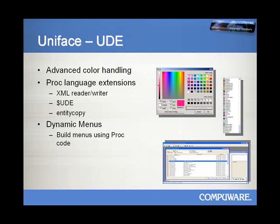The PROC code of Uniface 9 has been extended on many levels. PROC language now contains functionality to read and write XML files regardless of their format or structure. The $UDE PROC function gives the possibility to convert data and compile forms at runtime. PROC statements like entity copy allow developers to manipulate data conversions as they see fit — data can be copied at runtime from one database or file to another, and many more PROC language enhancements. Menus can now be dynamically built using PROC code, so the content of dynamic menus is set at runtime rather than being predetermined.